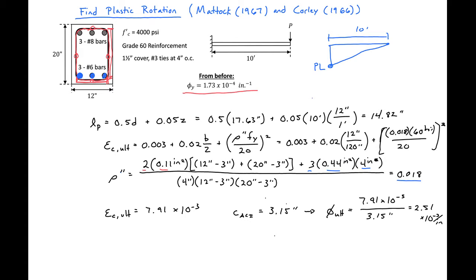So then we can use this ultimate curvature to find our plastic rotation. Our plastic rotation is just equal to our ultimate curvature minus our yield curvature times our plastic hinge length.